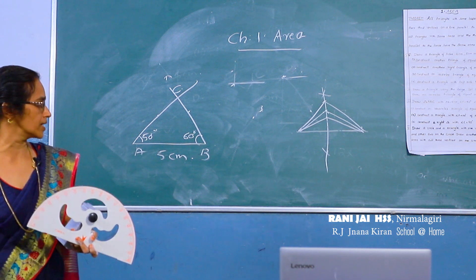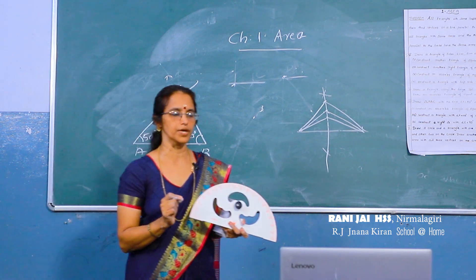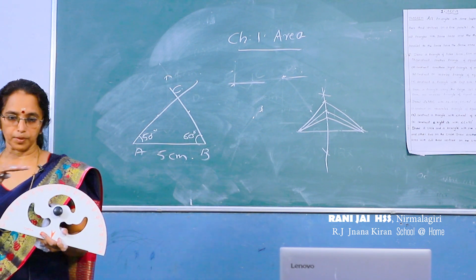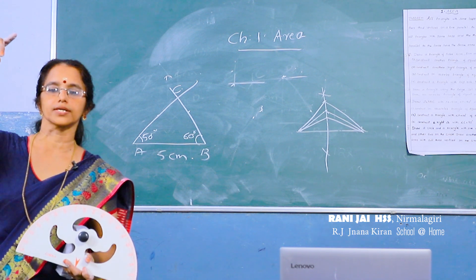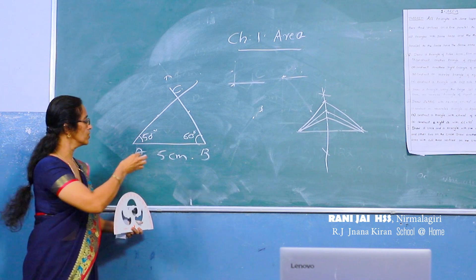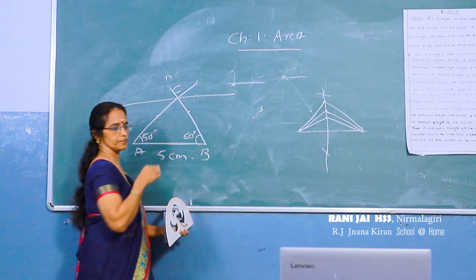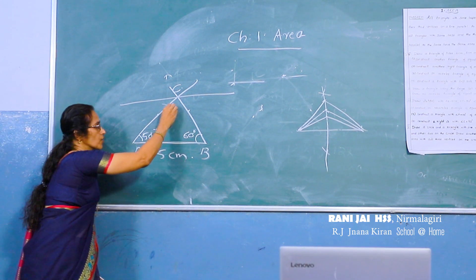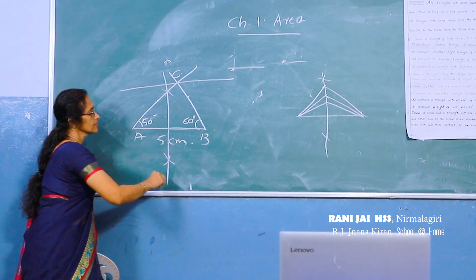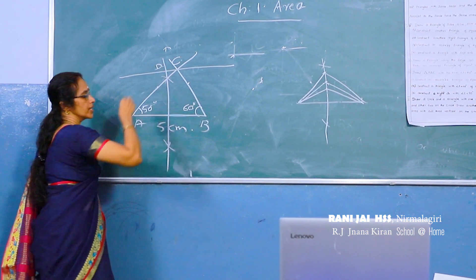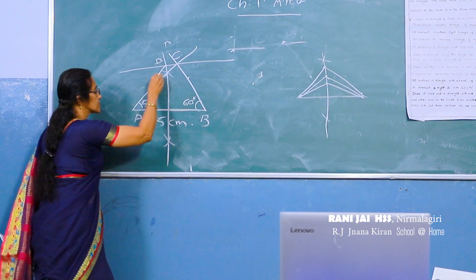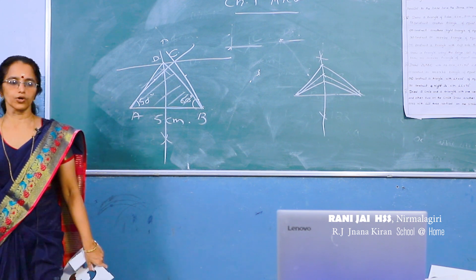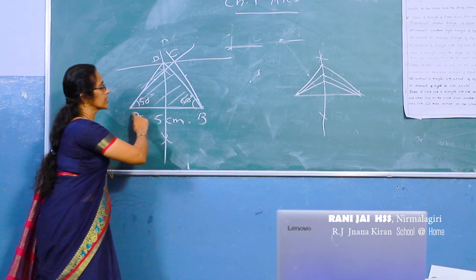This is our given triangle. Now draw an isosceles triangle of equal area. Since areas are equal, you must draw a line parallel to the base AB through C. Then draw the perpendicular bisector from AB using a compass. It will meet the parallel line at point D. Join D to A and B to get triangle ABD, which is our isosceles triangle equal in area to triangle ABC.